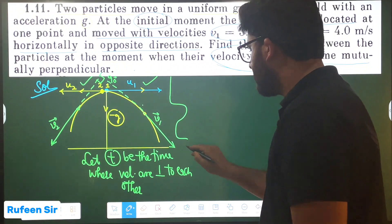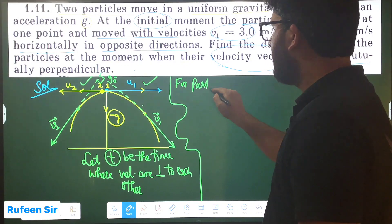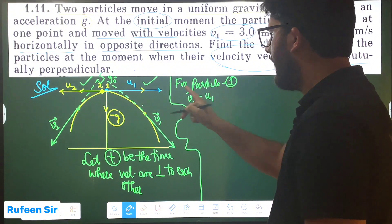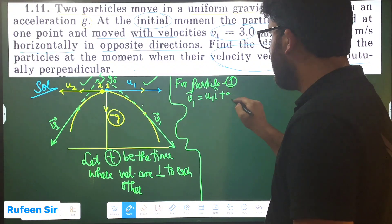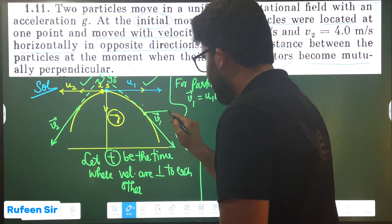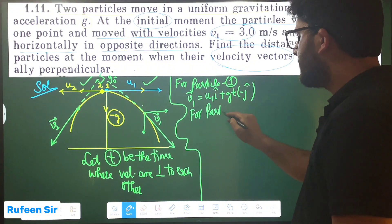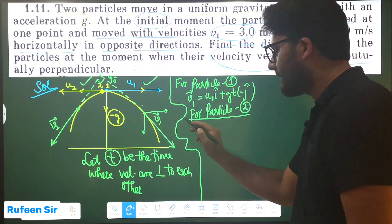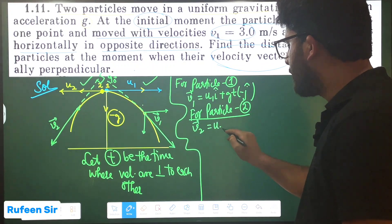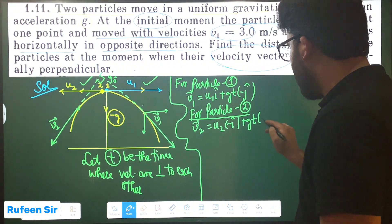After time T, what will be the velocity of both particles? For particle 1, the final velocity after time T will be: V1 = U1 î + (−gt) ĵ — where the horizontal component is U1 and the vertical component is −gt. Similarly for particle 2: V2 = −U2 î + (−gt) ĵ.